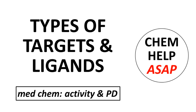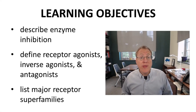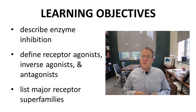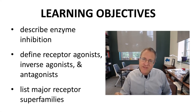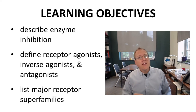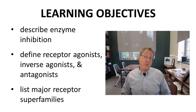Hello from Chem Help ASAP. In this video, we'll give more detail about drug target interactions with an emphasis on enzyme and receptor targets. By the end of this video, students will be able to describe enzyme inhibition, define receptor agonists, inverse agonists, and antagonists, and list major receptor superfamilies.